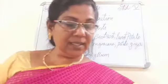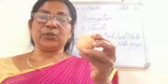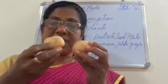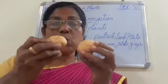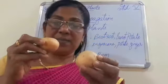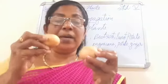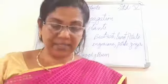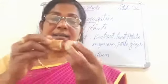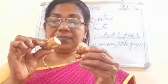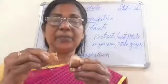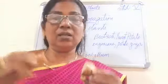Another example of stem reproduction is the potato. Potatoes are actually stems — they are not roots, but underground stems. When buried in the soil, they grow into new plants. Ginger is also an underground stem from which new plants will be growing.